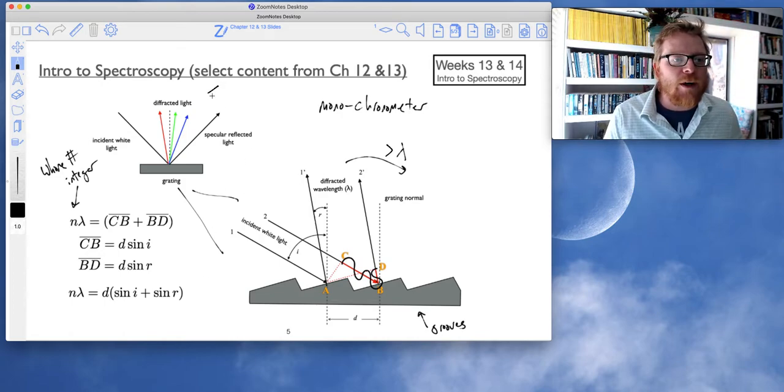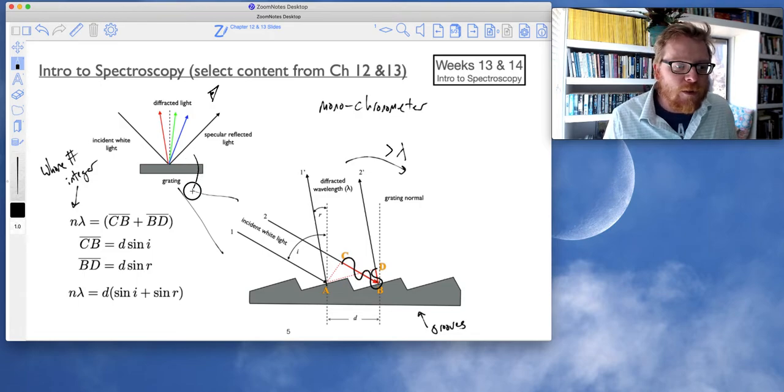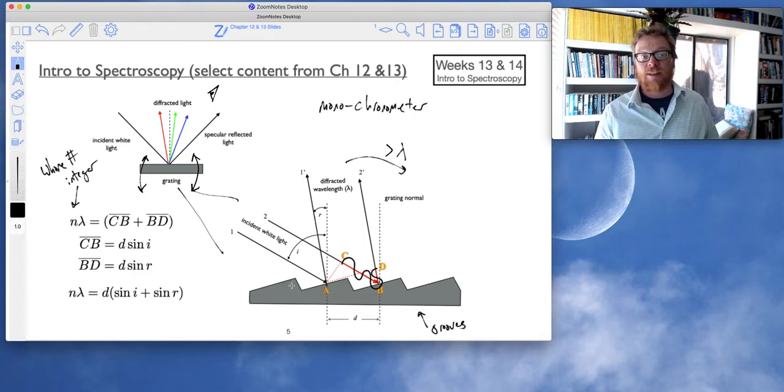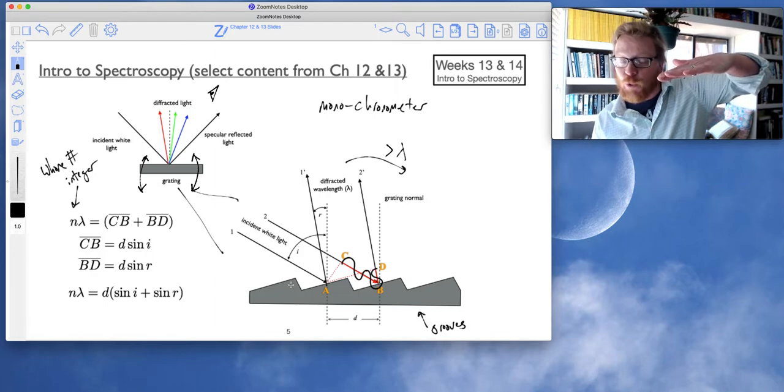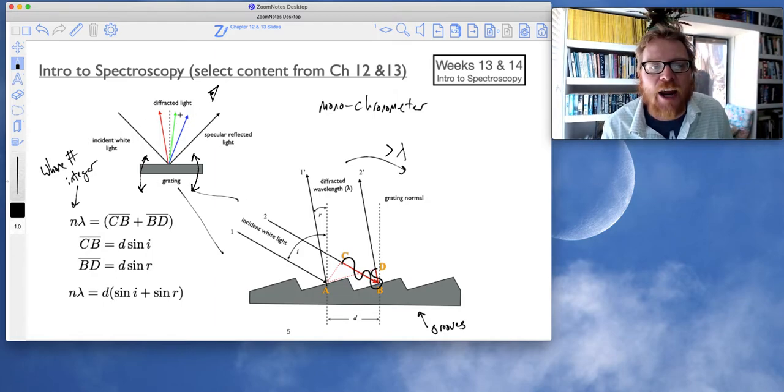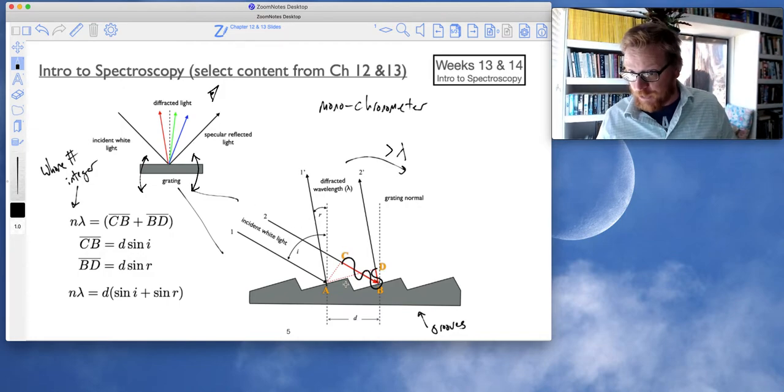And so, typically, the way that this works now, if I draw my detector up here, I don't want to detect the specularly reflected light, I want to detect the different colors. This grating will pitch and roll to give us those angles that we want. So, that grating will actually move, so it moves the desired wavelength into the path of the detector.